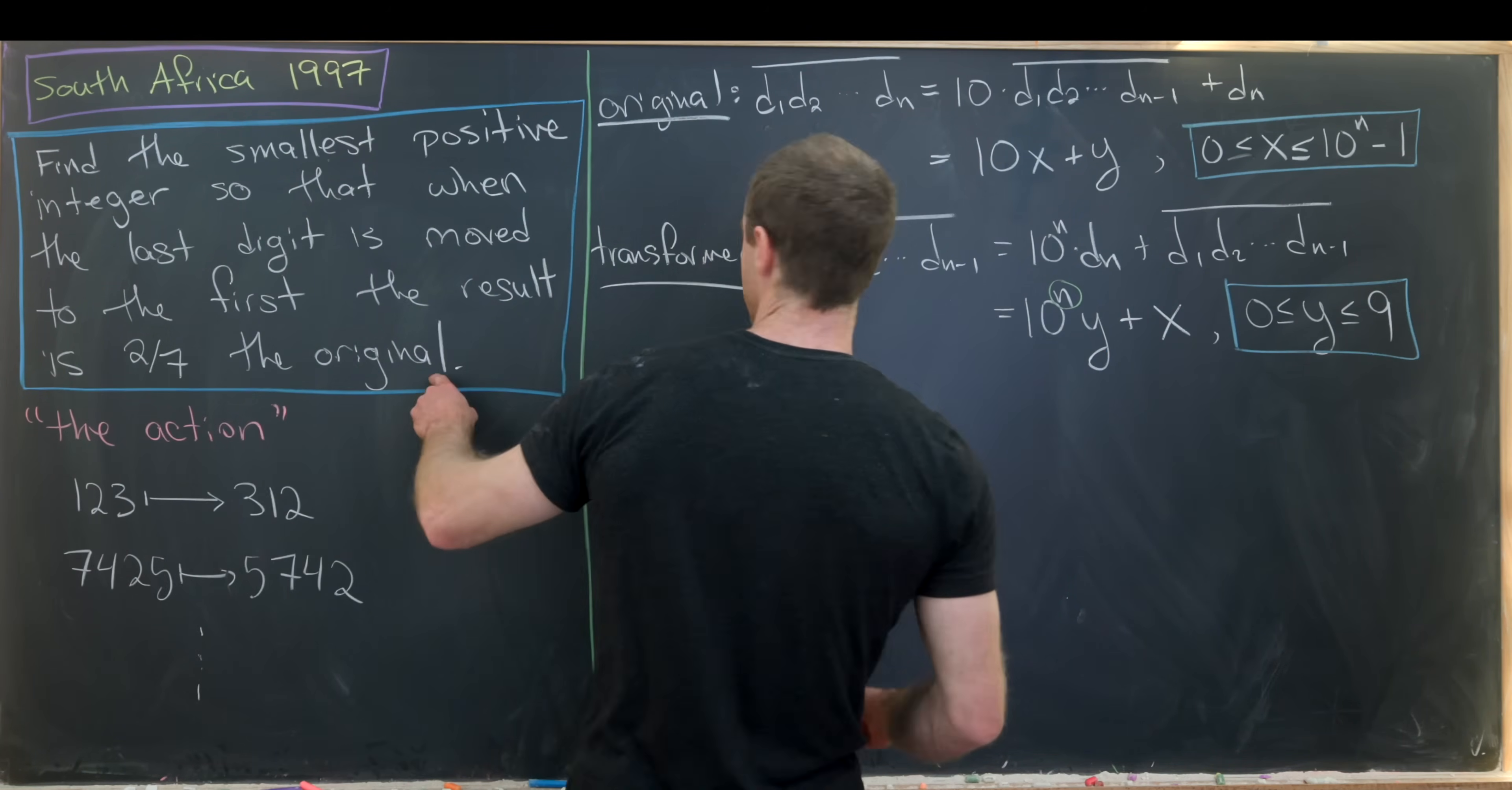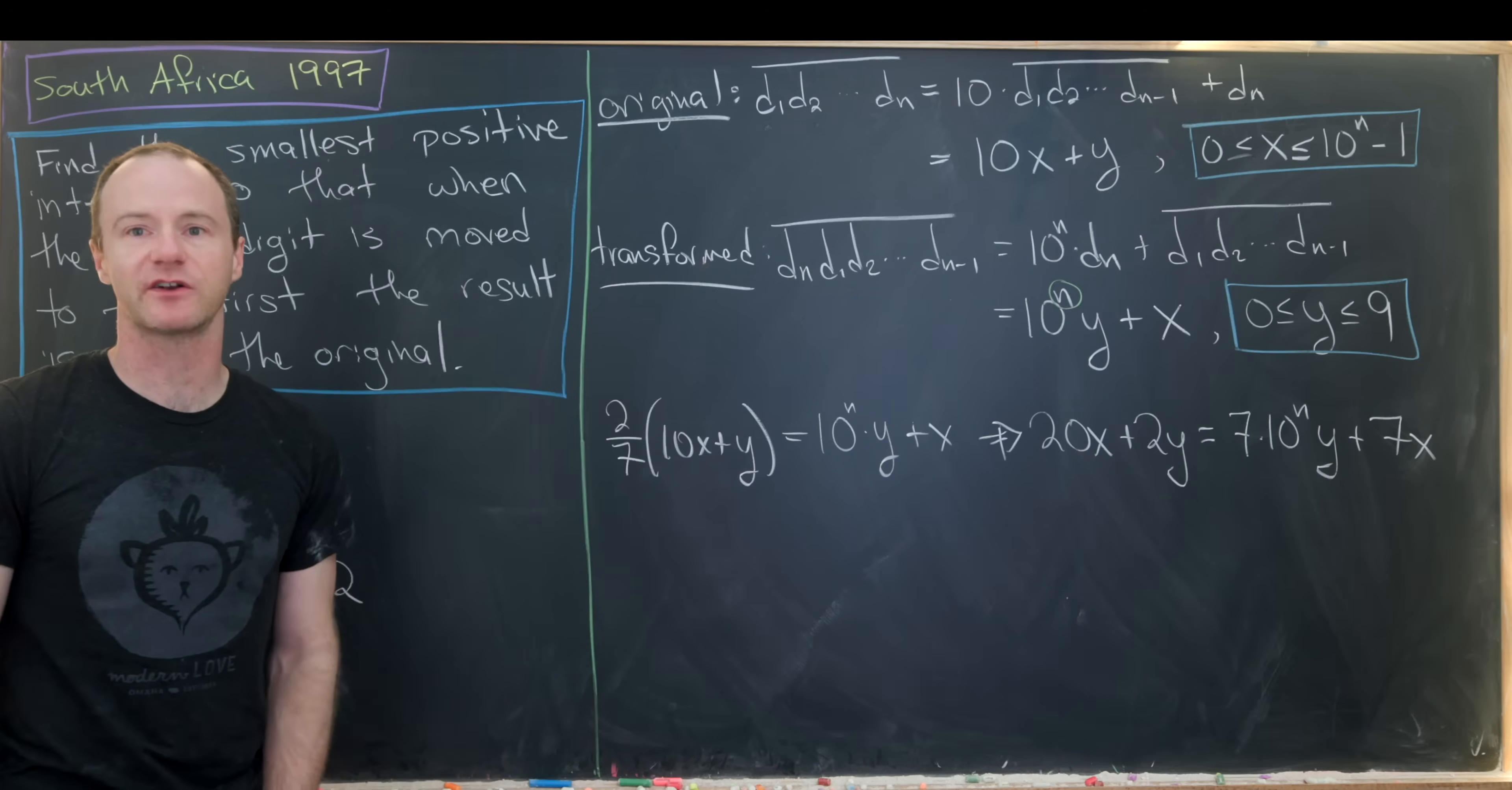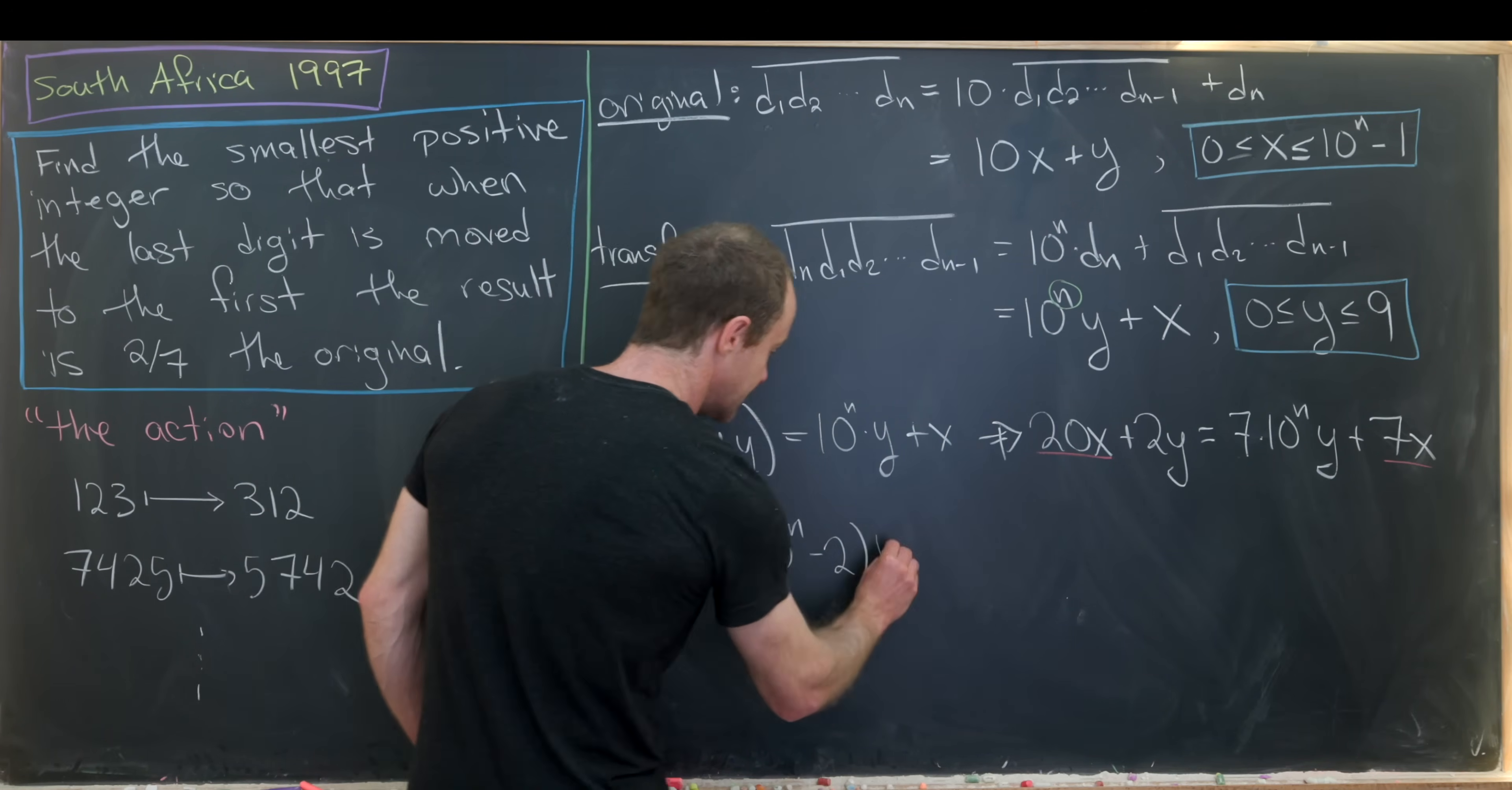So what do we want? We want two sevenths times the original. So that'll be two over seven times 10x plus y must be equal to the new one. So that's 10 to the n times y plus x. So let's note that that's the same thing as 20x plus 2y equals 7 times 10 to the n y plus 7x. Just by clearing denominators and then distributing through. So next up, notice the x stuff looks a little bit simpler to work with because it's attached to a number 20 and a number 7 instead of a number 10 to the n times 7. So what we'll do is solve for x in terms of y. Well, we're going to have 13x is equal to, let's see, 7 times 10 to the n minus 2 times y.